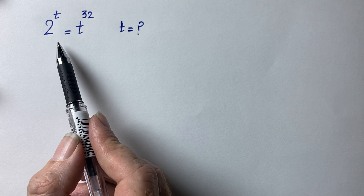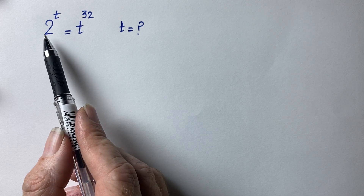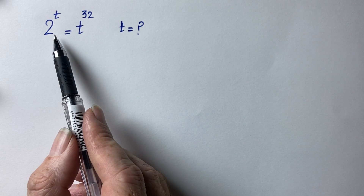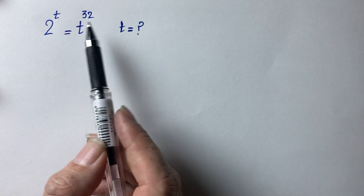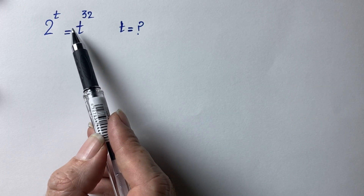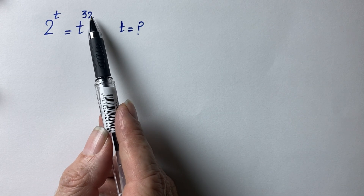Welcome back to my channel Drinking Math. In this video we are going to solve this nice exponential equation: find the value of t where 2 to the power of t equals t to the power of 32.